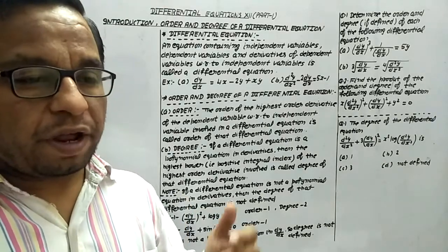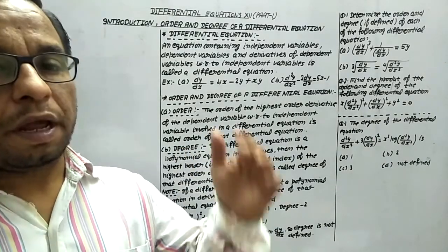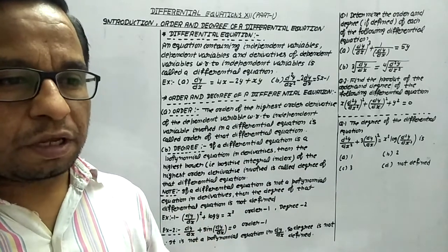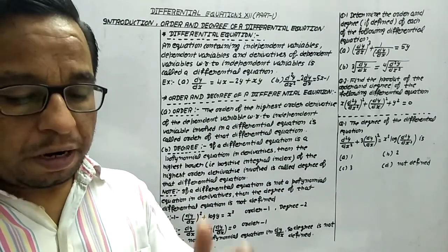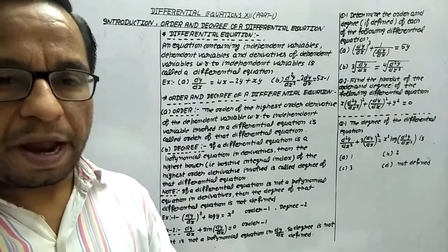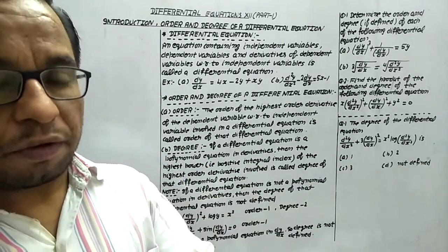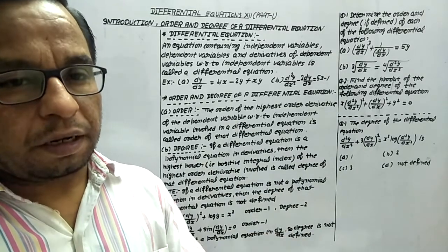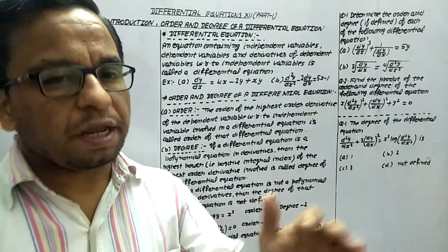We know very well, we have two types of variables: dependent variables and independent variables. On the basis of this, if any equation involves independent variables, dependent variables, and the derivatives of dependent variables with respect to independent variables, then that equation is known as a differential equation.